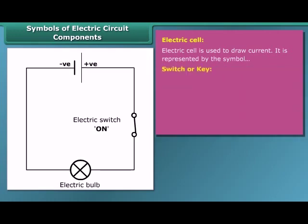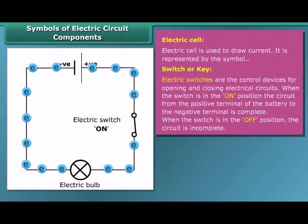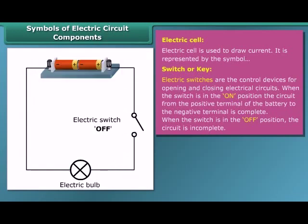A switch or key makes or breaks the connection in a circuit. When the switch is in the on position, the circuit is closed and the current flows throughout the circuit. When the switch is in the off position, the circuit is open and no current flows through the circuit.